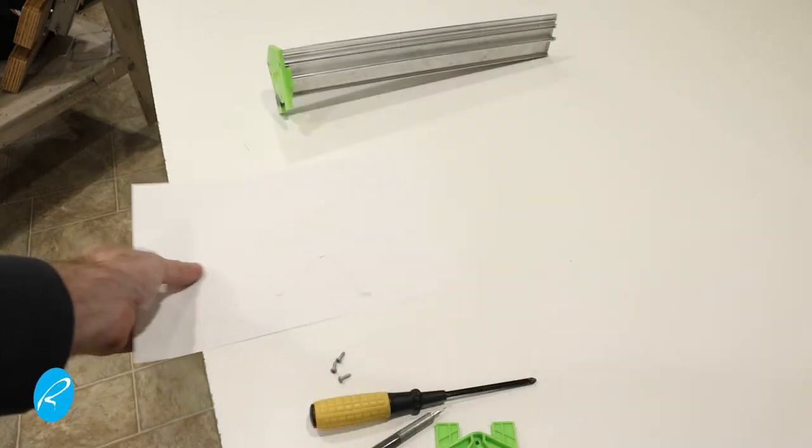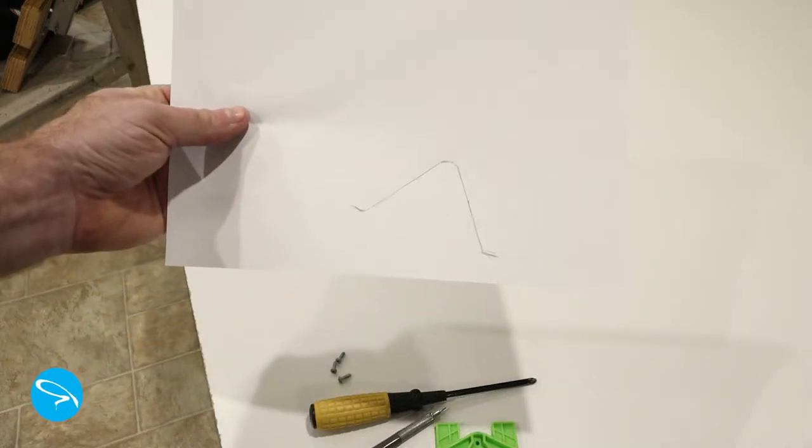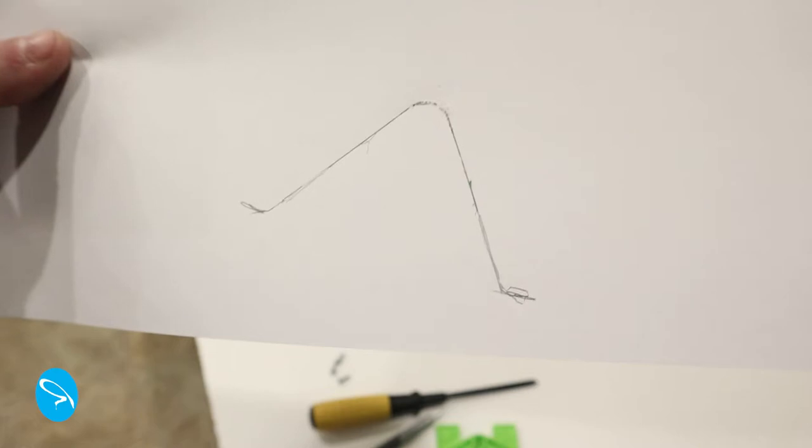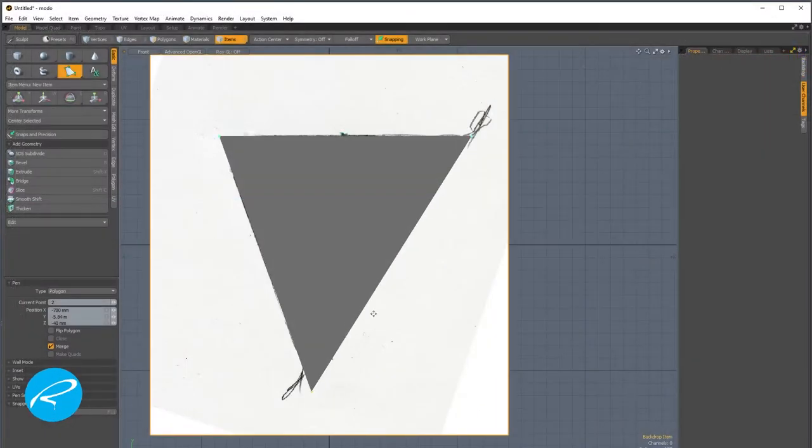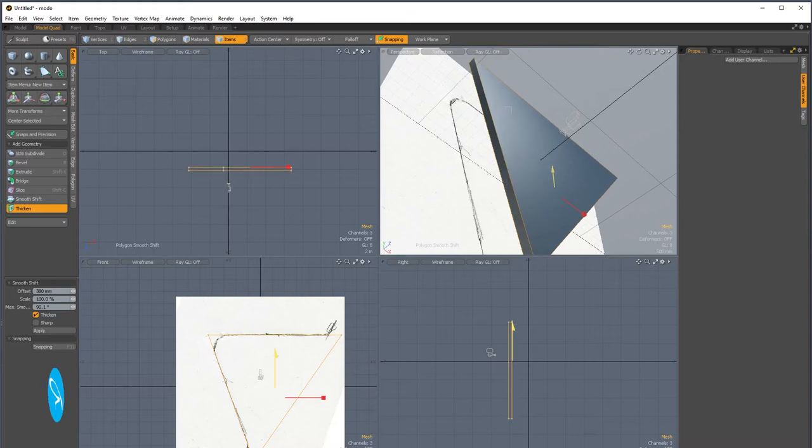I scan this image into my computer. If you don't have a flatbed scanner, you could take a picture with your phone. Once I have it in the computer, I straighten it out in Photoshop before bringing it into my 3D software package as a background image.